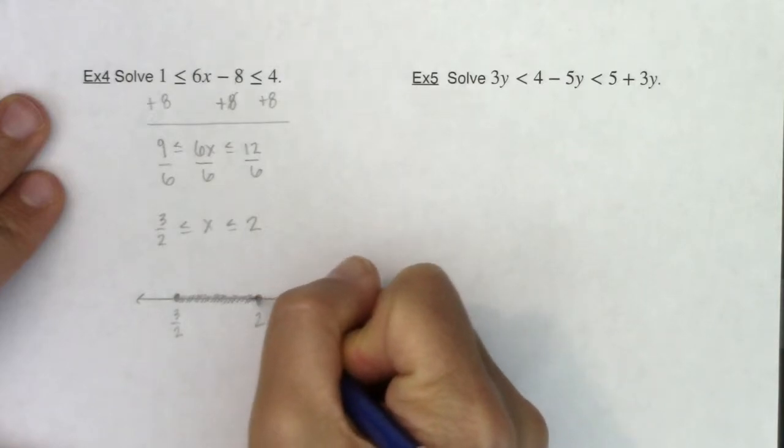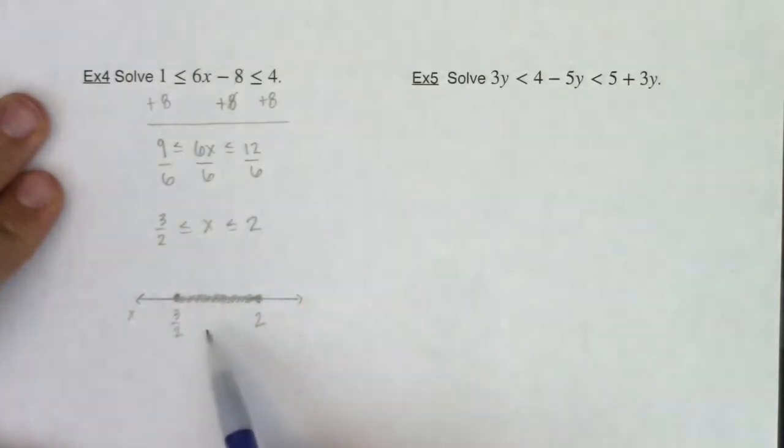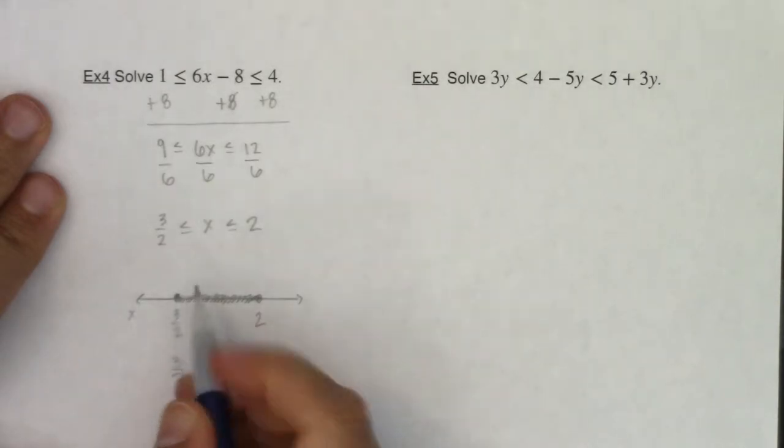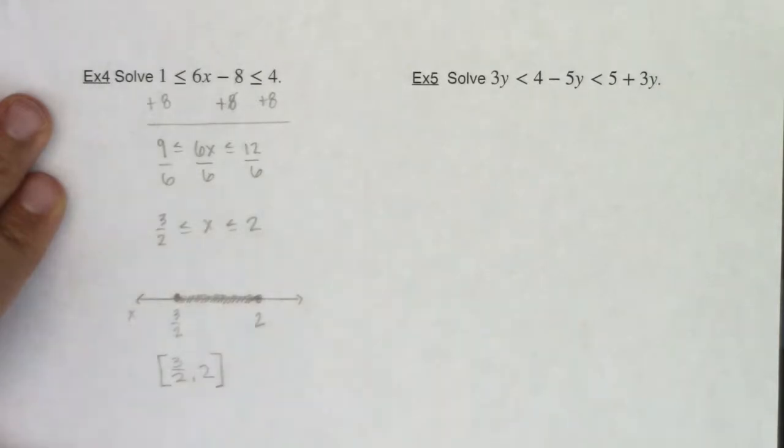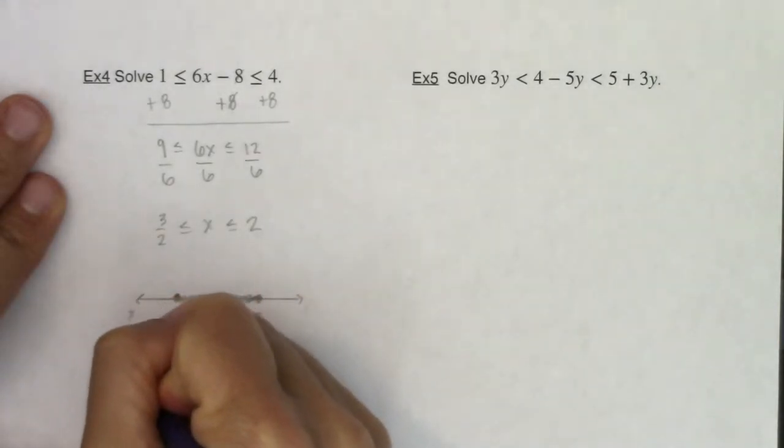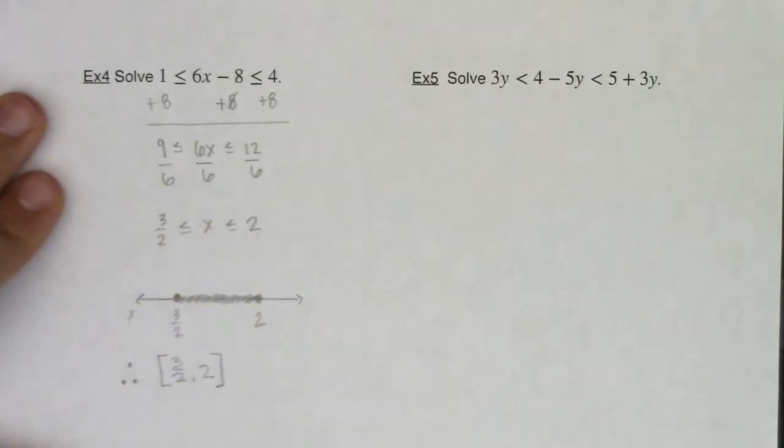And then over here, I'm at positive two, and I want to shade everything in between that. That would be my x-axis. And when I think about how I want to write that up in an interval, when I want to go low to high, I know I'm going to go three halves comma two. Now because this is a closed dot, I will use a closed bracket. Closed dot, closed bracket. So there is my answer, and it's in interval notation.